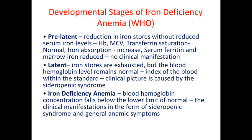There are three developmental stages of iron deficiency anemia according to the World Health Organization: pre-latent, latent, and iron deficiency anemia. In the pre-latent stage there is reduction in iron stores without reducing serum iron level — hemoglobin, MCV, and transferrin saturation are normal; iron absorption is increased; serum ferritin and marrow iron are reduced, but there is no clinical manifestation. Anemia does not develop quickly — it starts from decreasing iron stores in tissues.